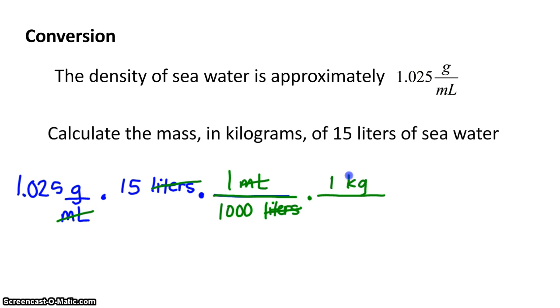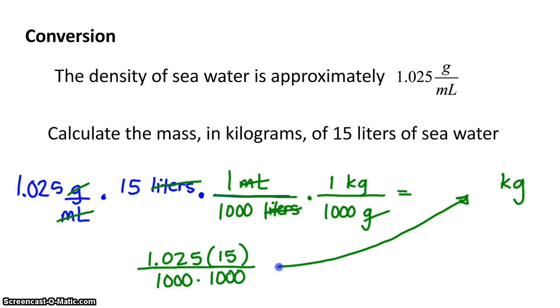Now the grams cancel out and we're going to be left with the only unit of measure of kilograms. So I'm going to take 1.025, I'm going to multiply it by 15, and I'm going to divide it by 1,000 twice. And that's the answer. I'm running out of time. So you can use your calculator to get that value. And I hope you found this video to be helpful, and we'll see you in the next.